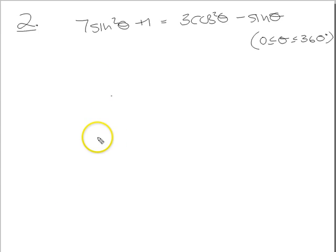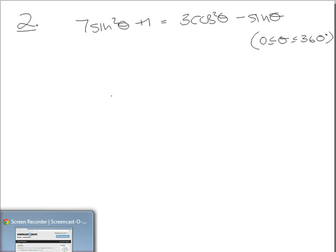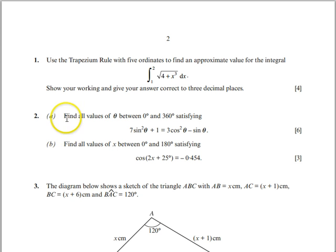Right guys, let's have a look at question 2 then. I've written it out actually, but let's go back to the paper just to have a quick look at it. Here's question 2, part a. It says find all the values of theta between 0 and 360 satisfying the equation below: 7sin²θ + 1 equals 3cos²θ - sinθ.